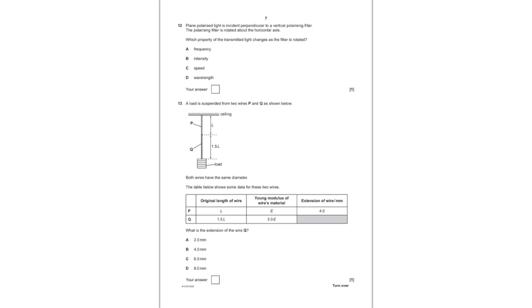For question number 12, we are given plane polarized light is incident perpendicular to a vertical polarizing filter and the polarizing filter is rotated about the horizontal axis. Which property of the transmitted light changes as the filter is rotated? It is only the intensity that would change. So B is the straightforward answer.